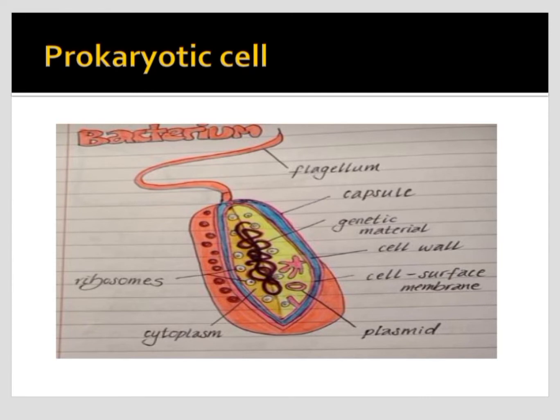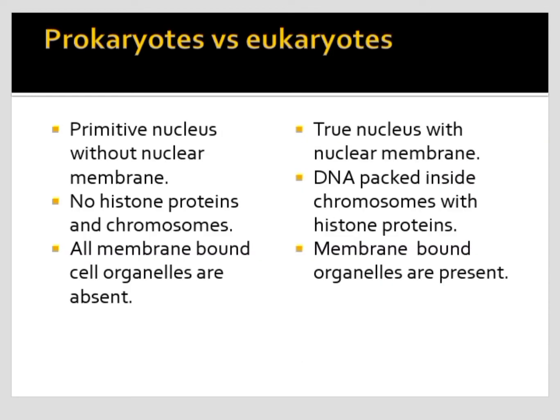In eukaryotes, DNA is wrapped around histone protein octamers and is present inside chromosomes, so DNA is packed in a specific arrangement. In prokaryotes, that arrangement is absent, as you can see clearly here.